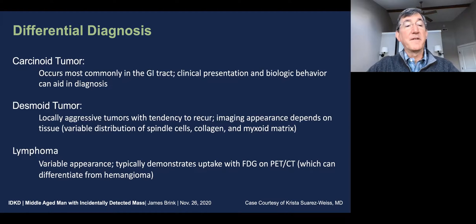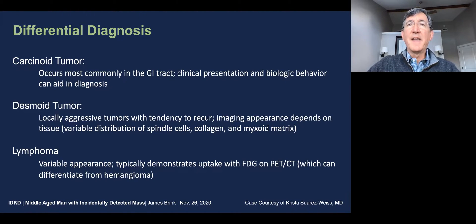Differential diagnosis includes carcinoid tumor, but these occur mostly in the GI tract, and the clinical presentation and biologic behavior can aid in the diagnosis.